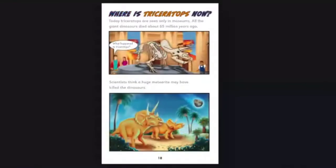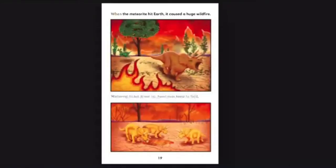Where is Triceratops now? Today, Triceratops are seen only in museums. All the giant dinosaurs died about 65 million years ago. Scientists think a huge meteorite may have killed the dinosaurs. What happened to Triceratops? When the meteorite hit Earth, it caused a huge wildfire. Watering holes dried up. Food was hard to find.